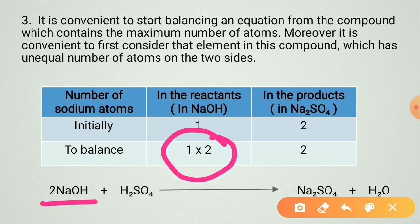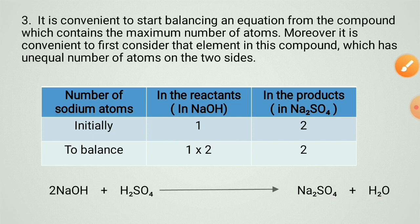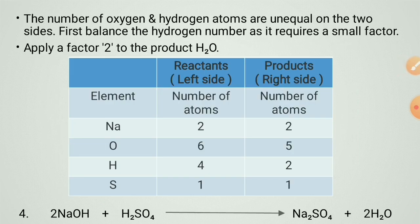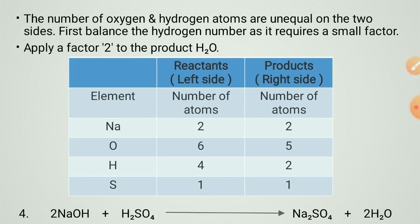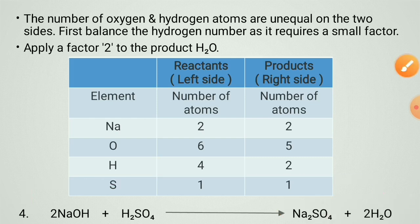After multiplying two on the reactant side, the number of oxygen and hydrogen has increased, so you have to balance those too. Apply two to H₂O on the product side to balance hydrogen. Now check: sodium in reactant is two, product also two; oxygen in reactant is six, product also six; hydrogen in reactant is four, product also four; sulfur in reactant is one, product also one. The equation is now balanced.